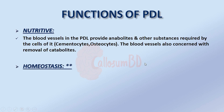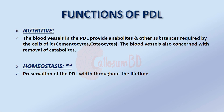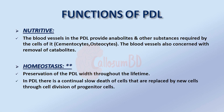The homeostatic function of the periodontal ligament is its most important function. It preserves the width of the periodontal ligament throughout life. In the periodontal ligament, there is a continuous slow death of cells that are replaced by new cells through the cell division of progenitor cells.